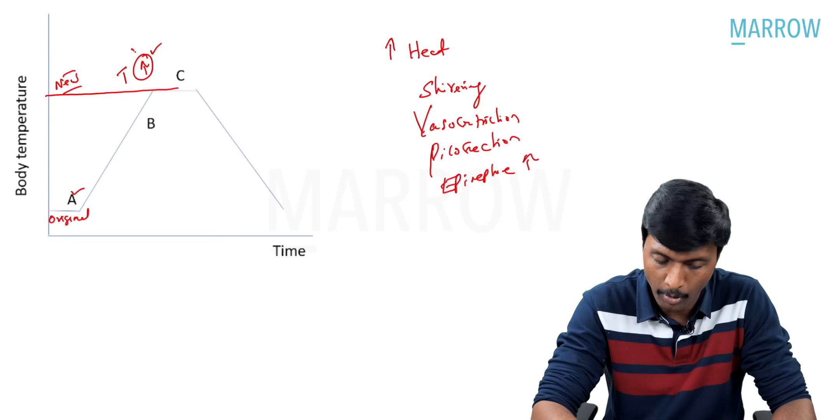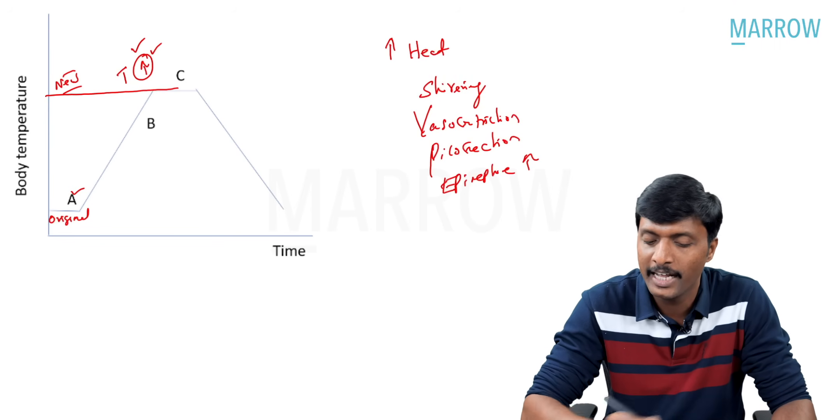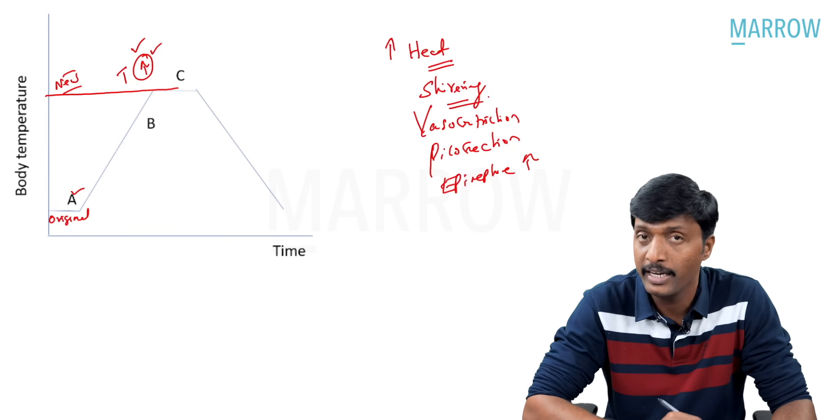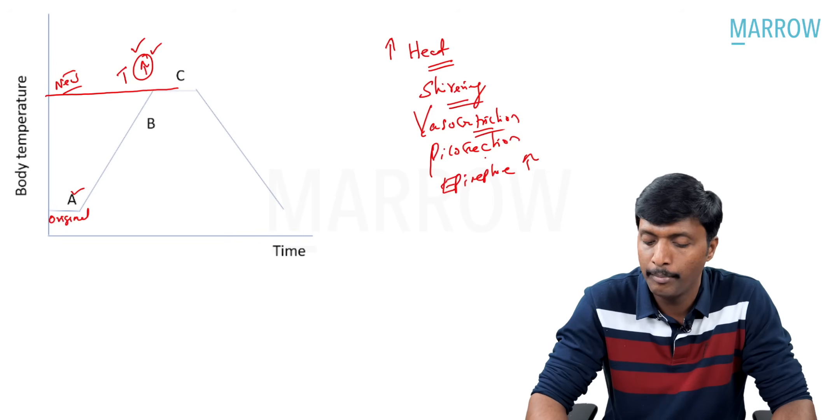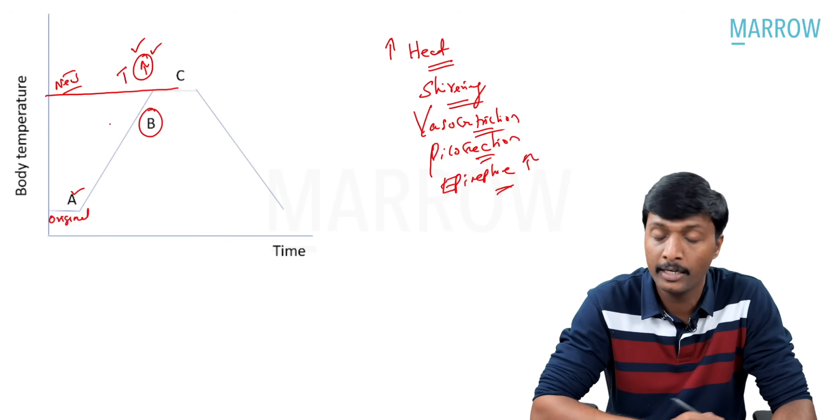A new set point, temperature is elevated. So what you need to generate heat to elevate the temperature, there should be shivering, vasoconstriction, piloerection, epinephrine secretion increase. All this happens in B.